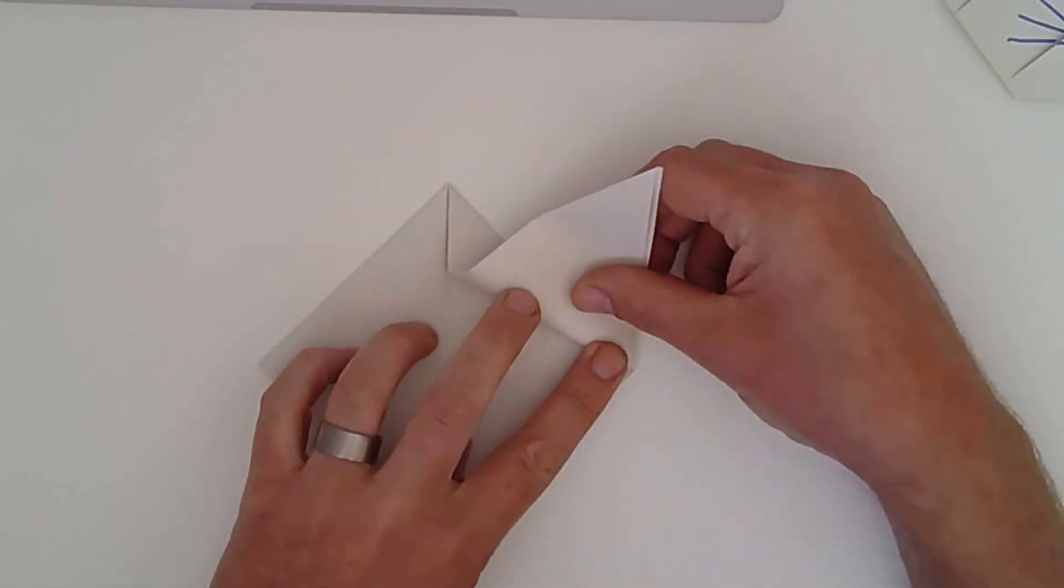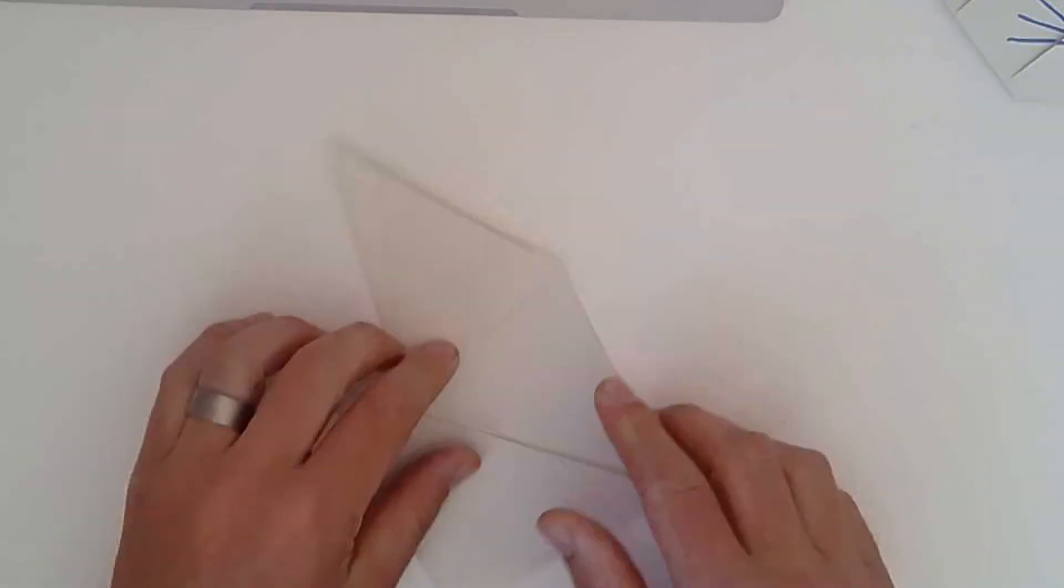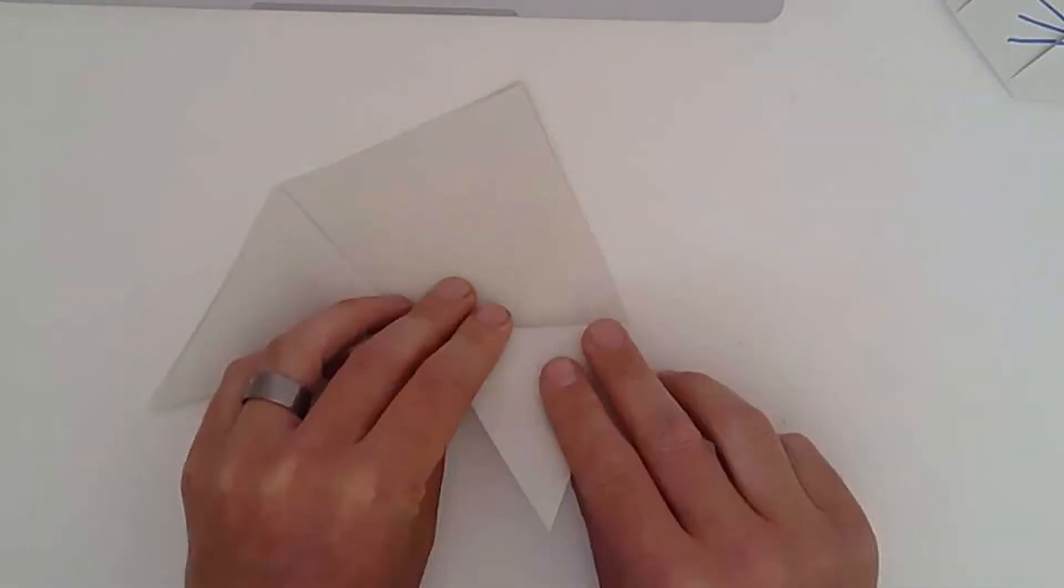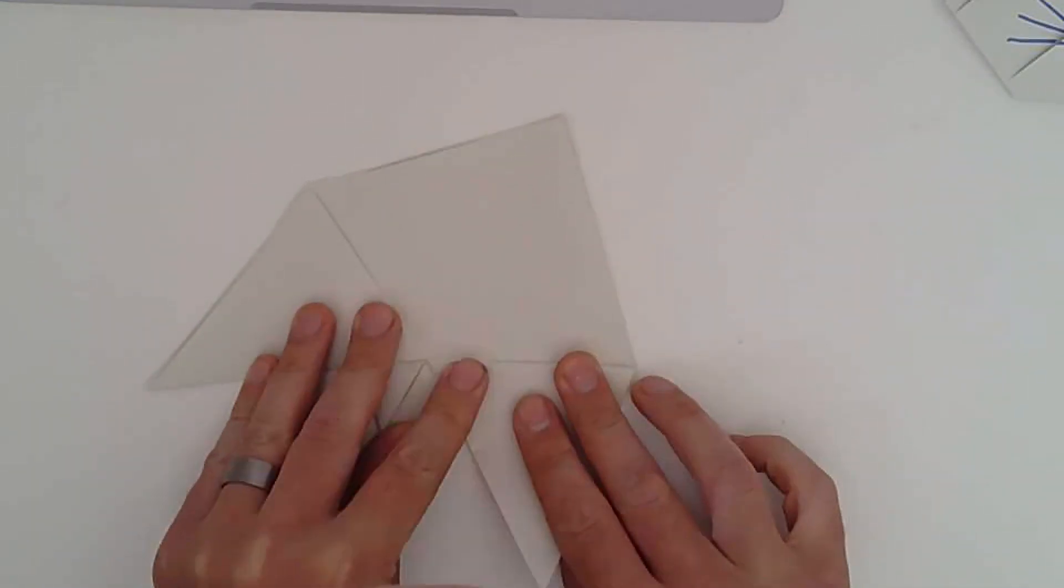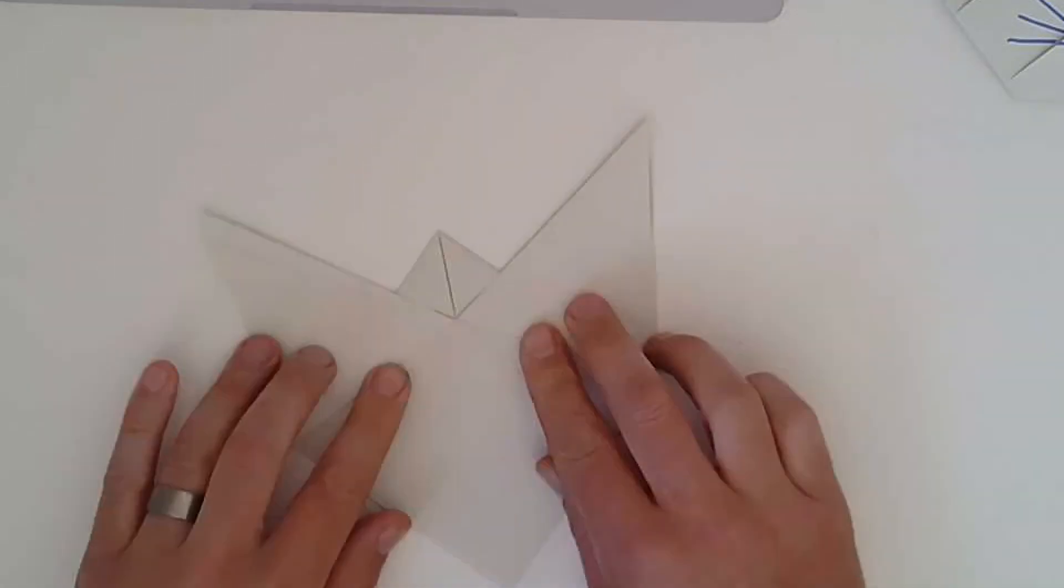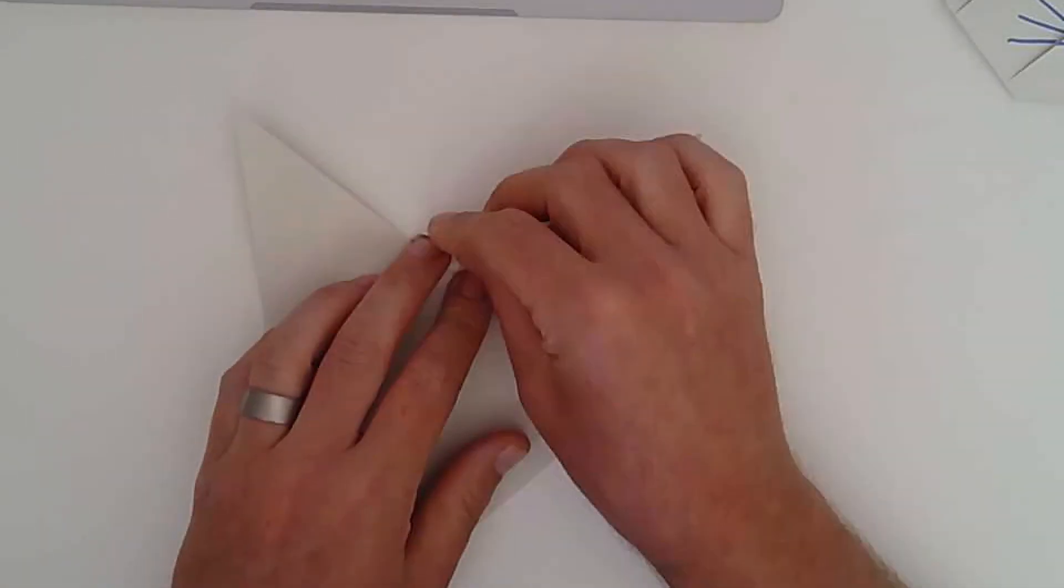And again, you want it from that corner. So from that corner, we're going to fold up. And again, as long as it's from this corner here, it's fine. As long as they kind of meet so that the ears look even. And you've got two ears. Then if you remember, you just tuck this bit down.